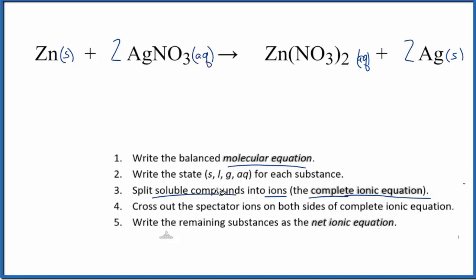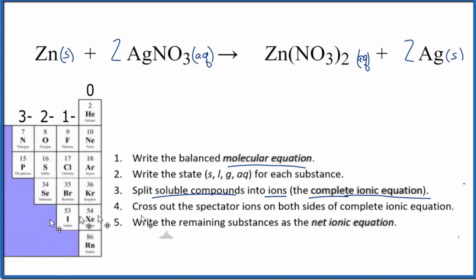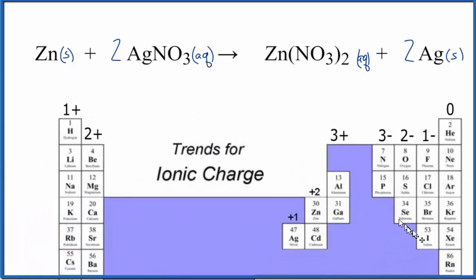Before we do that, we need to write the charge for all of the ions. So zinc, there's no charge for that. It's neutral by itself. Silver, let's look at the periodic table here. We can see we've written the charges here for the different groups. We can see silver, that should be one plus. So silver has a positive charge. And silver, even though it's a transition metal, it's always going to be positive.